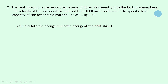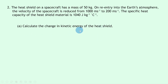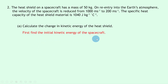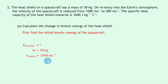Question 2 says: the heat shield on a spacecraft has a mass of 50 kilograms. On re-entry into the Earth's atmosphere, the velocity of the spacecraft is reduced from 1000 meters per second to 200 meters per second. The specific heat capacity of the heat shield material is 1040 joules per kilogram per degree Celsius. Part a says to calculate the change in kinetic energy of the heat shield. To do this, we want to first find the initial kinetic energy of the spacecraft.